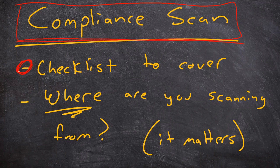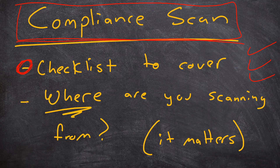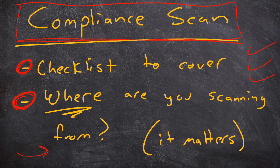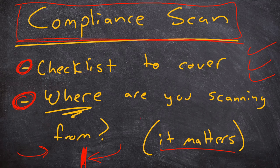With compliance scanning, you get a checklist and you go through the list to make sure things aren't vulnerable and are up to date. The other thing about compliance scanning is that it also makes you look from multiple angles — meaning, are you scanning from the inside of the network to the computer, or are you trying to break into a firewall to see what you can access from the outside? It matters because a lot of compliance scans like PCI DSS require that you scan from both directions — you have to scan internally and also from the outside.